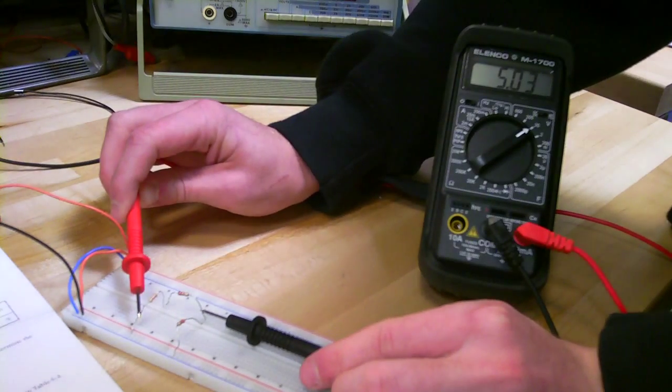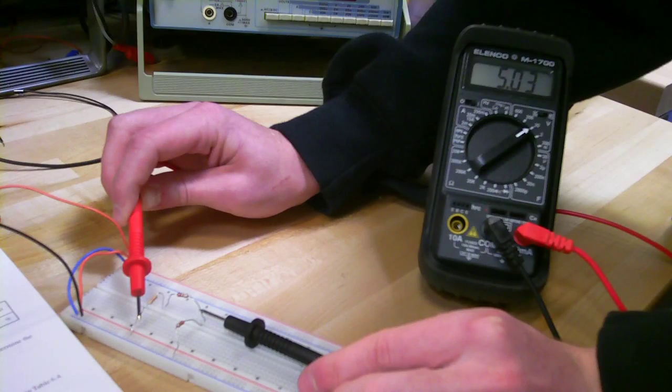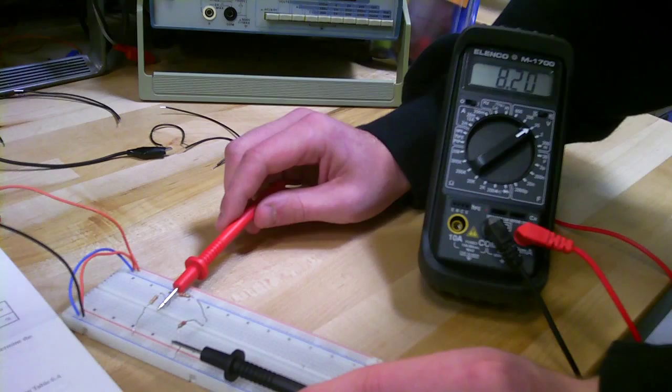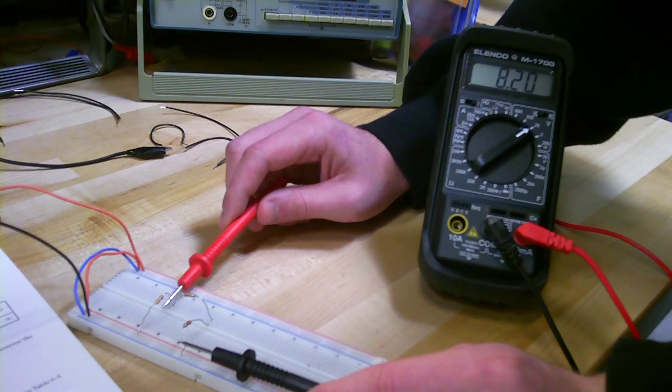And this is the voltage A to C. And I see 5.03 volts. And now we're going to measure the voltage B to D. And I see 8.2 volts.